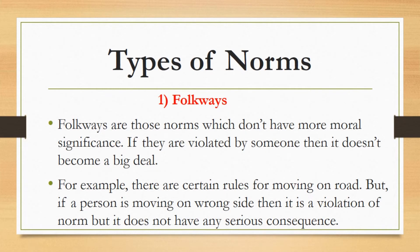Now we will study two different types of norms. Keep in mind that there are two types: one is folkways and the other is mores. First of all, folkways. Folkways are those norms which don't have moral significance. If they are violated by someone, then it doesn't become a big deal — their violations don't create any serious issue, therefore folkways are not strictly enforced.